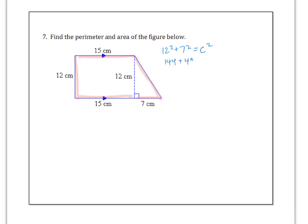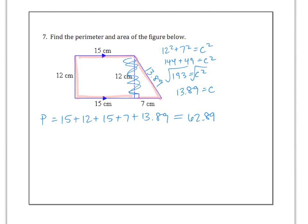144 plus 49 equals C squared. 144 plus 49 is 193. And then you take the square root. And the square root of 193 is not a great answer. It's not a nice number, but it is 13.89 is C. So I'm going to fill that in. Can I now find the perimeter around the entire shape? Yeah, the perimeter is going to be 15 plus 12 plus 15 plus 7 plus 13.89. I do not count this one because that's not part of the distance around the outside. And so let's go ahead and add all that up. So I'm going to add on a 15, a 12, a 15, and a 7. And I got 62.89 and we would label it centimeters.